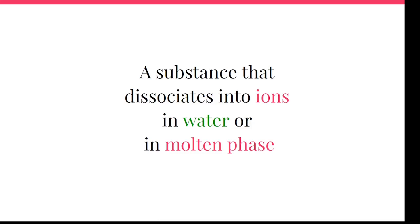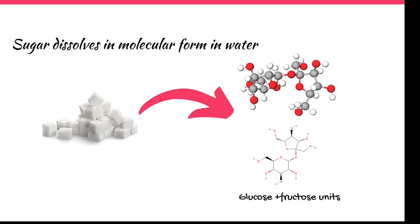From a chemical point of view, an electrolyte is a substance that dissociates into ions in water or in molten phase. When you look at sugar, it is a disaccharide consisting of glucose and fructose units. When sugar is dissolved in water or even melted, it doesn't change its chemical form — it is dissolved in molecular form and doesn't dissociate further. Even the tiniest particle is still a sugar molecule, so sugar is not an electrolyte.